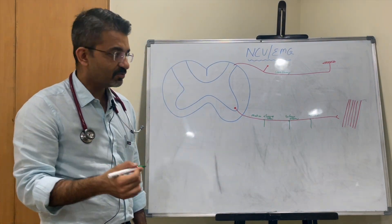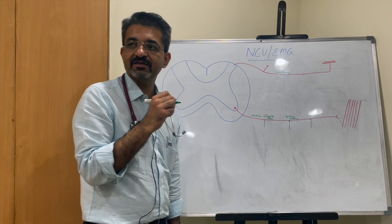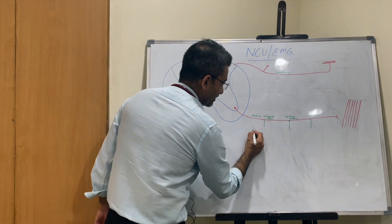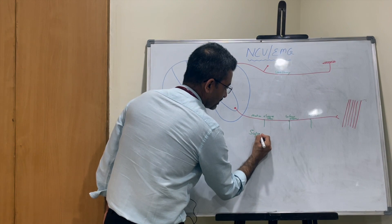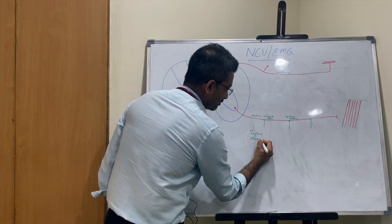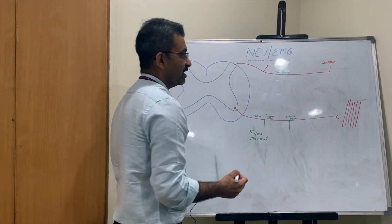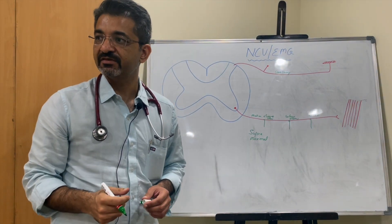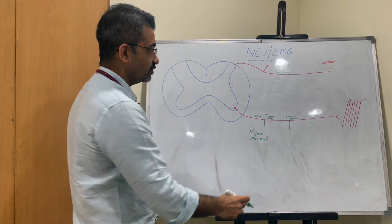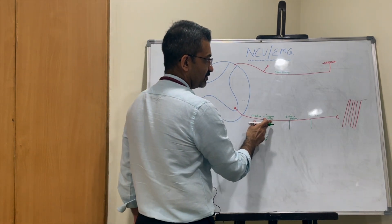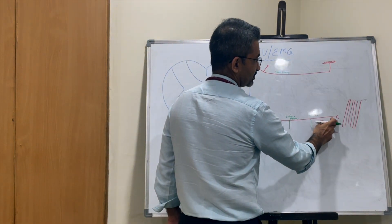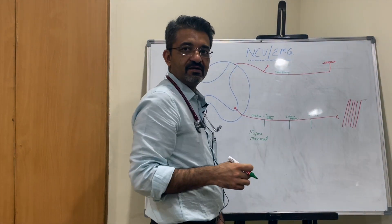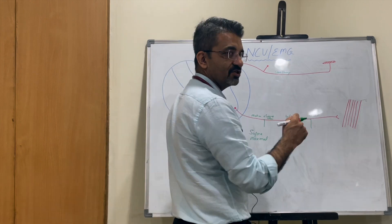How do we stimulate? We stimulate by giving electrical current to the nerve. The type of stimulation used is supramaximal stimulation, meaning 100% of the nerve fibers are stimulated. The current flows down through the neuromuscular junction, acetylcholine is released, nicotinic receptors are involved, and there is a contraction of the muscle.